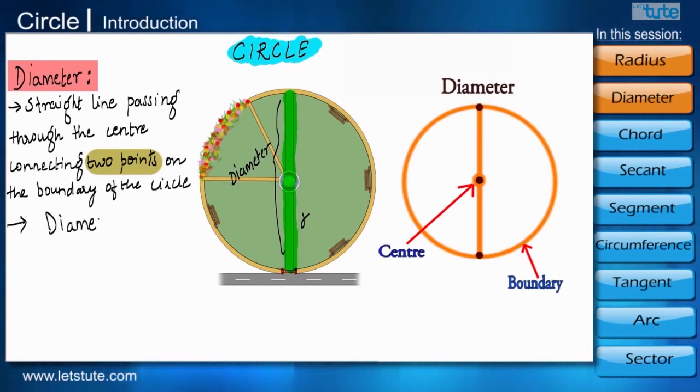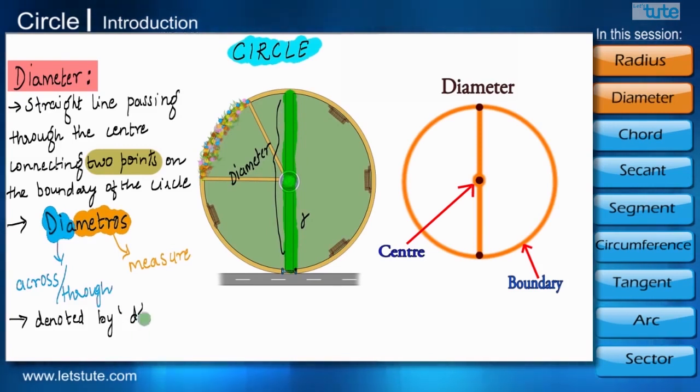Diameter comes from a Greek word diametros where di means across or through and metron means to measure. Diameter is denoted by the small letter d.